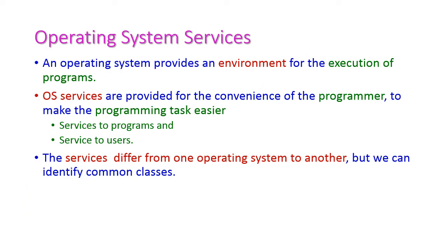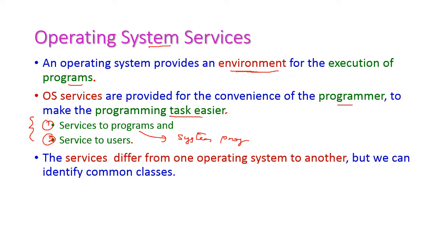The operating system provides a user-friendly environment to execute programs and get results. If it is a convenient environment, the programmer can execute programming tasks more easily. The OS provides two types of services: the first is service to programs, that is system programs, and the second is service to users.